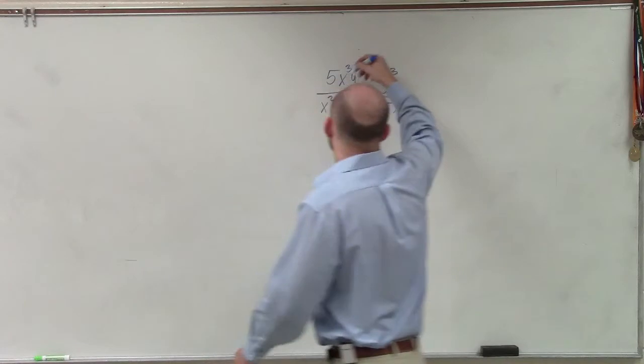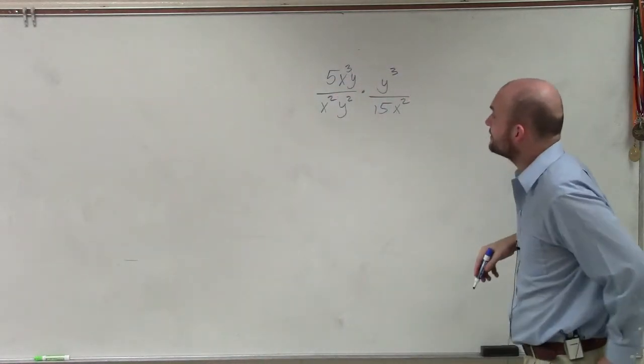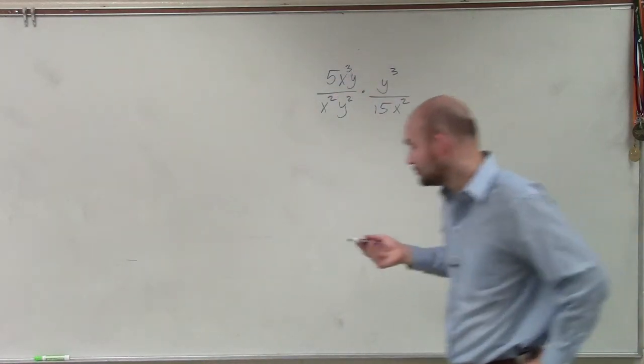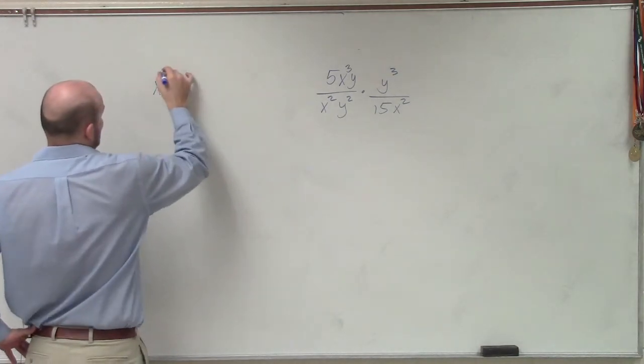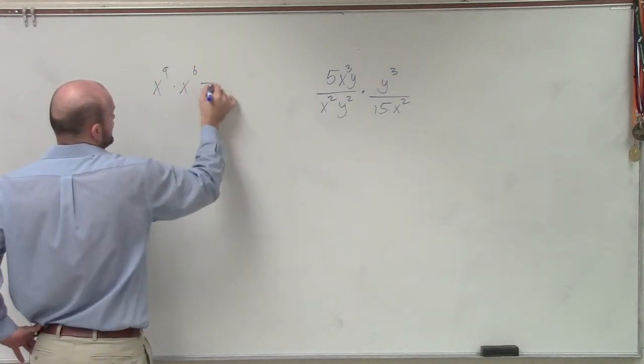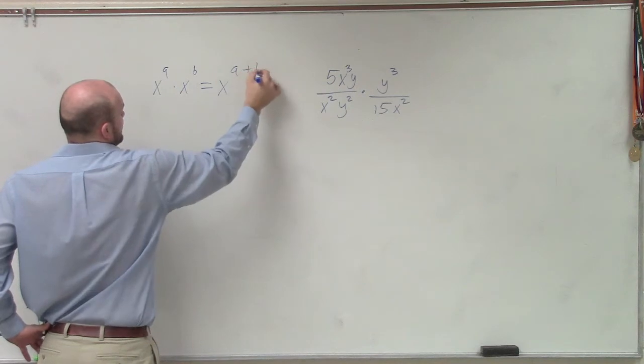So here, when I'm multiplying these, my only like terms that I have is my y and my y cubed. Now remember, by my rules of exponent, if I have x to the a times x to the b, that equals x to the a plus b.